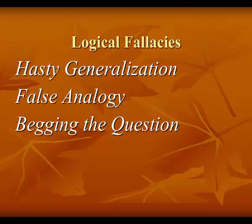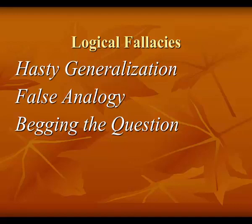Hasty generalization is the next one. Writers are guilty of this when they draw their conclusions from too little evidence, or unrepresentative evidence. For example, to argue that scientists should not proceed with the Human Genome Project because a recent editorial urged that the project be abandoned is to make a hasty generalization. Because the person who wrote that editorial may be unrepresentative of the views of most individuals, both scientists and lay people.